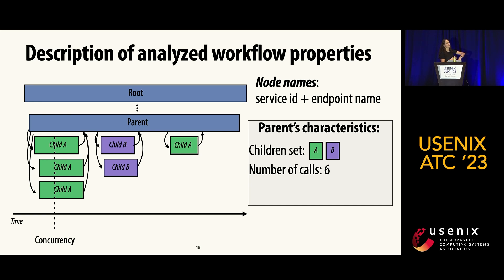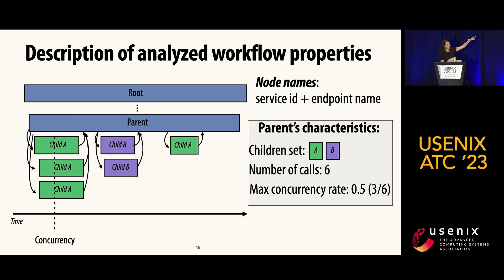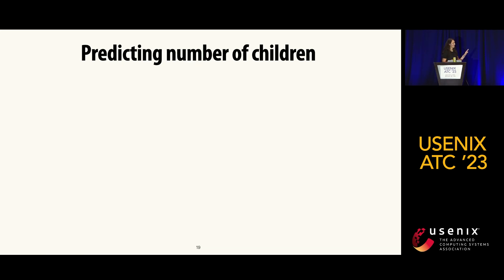We look for the maximum number of children running in parallel at any given point and divide by the total number of children. Here three children are running in parallel at maximum, divided by six, giving a maximum concurrency rate of 0.5.